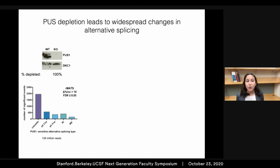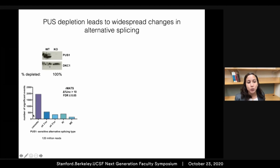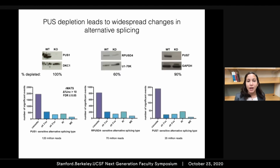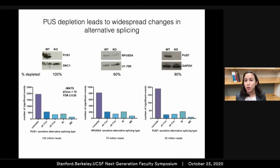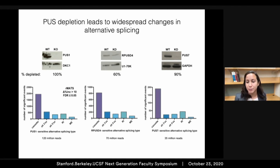Strikingly, we found thousands of alternative splicing changes when we knocked out PUS1, the majority of which were in cassette exons, but also other types of alternative splicing. I then depleted the two other pseudouridine synthases that had the most pre-messenger RNA targets and similarly found widespread regulation of alternative splicing upon depletion of these enzymes.